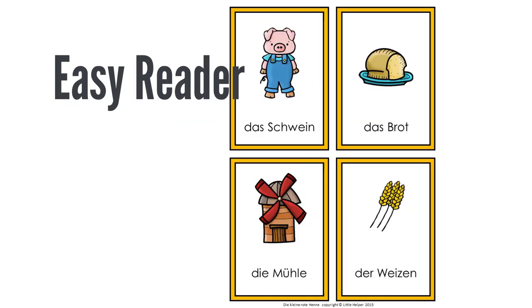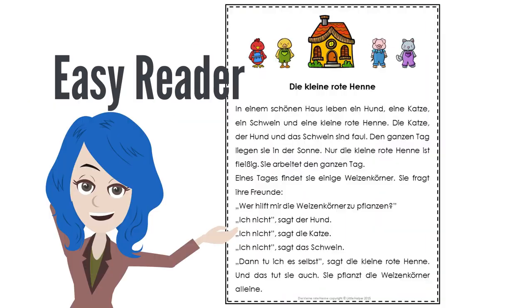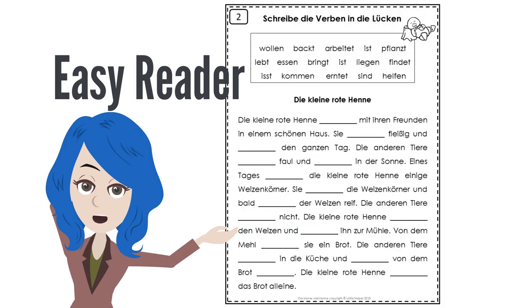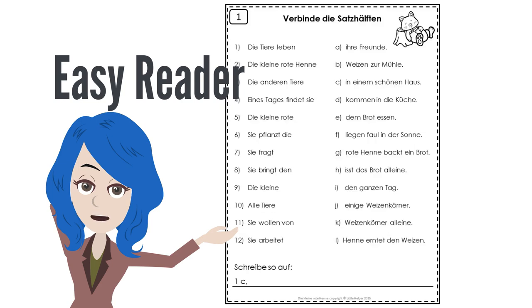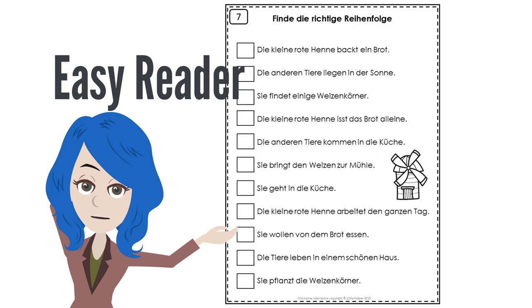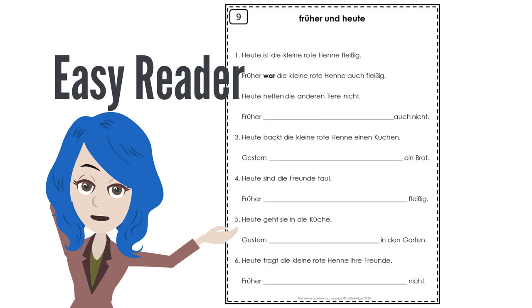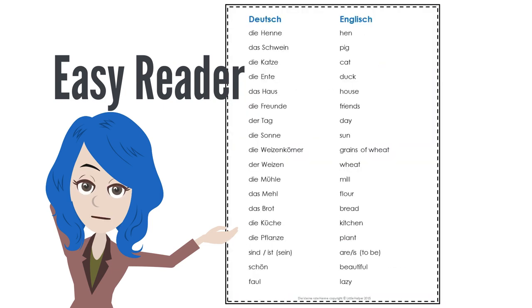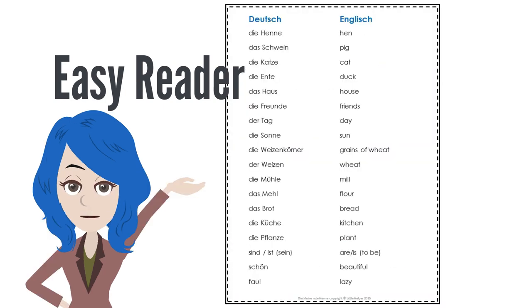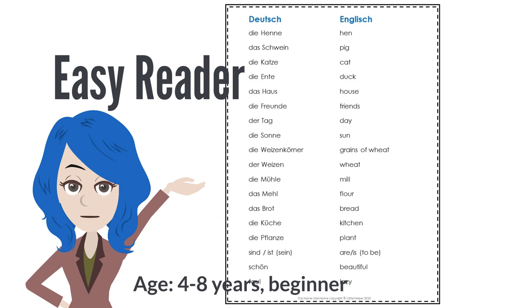Easy reader: Also called introductory readings or early readings, easy readers have a limited vocabulary and constitute a chapter book. The text block is larger and the image is more of an illustration than a basic element of the story. Age range: Four to eight years.